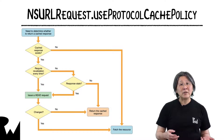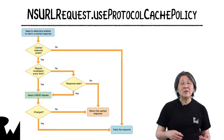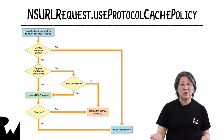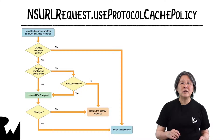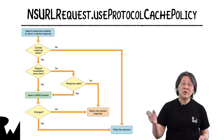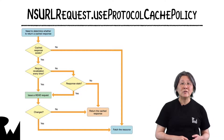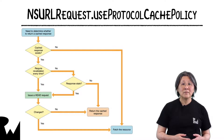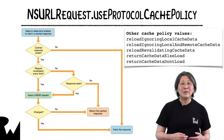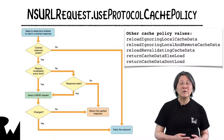If the cached response is stale or requires validation, the URL loading system makes a HEAD request to the originating source to see if the resource has changed. If so, the URL loading system fetches the data from the originating source. Otherwise, it returns the cached response. The other cached policy values either ignore cached data or do some part of the default workflow.